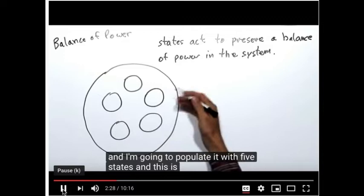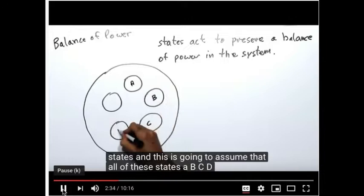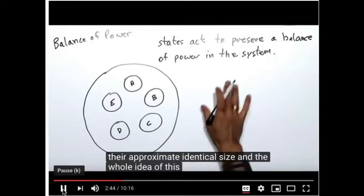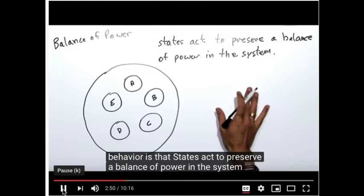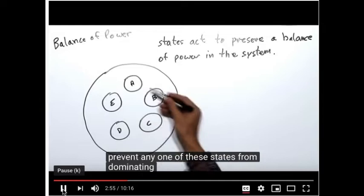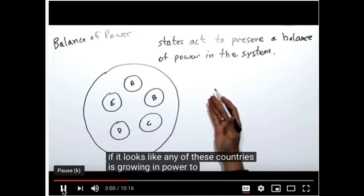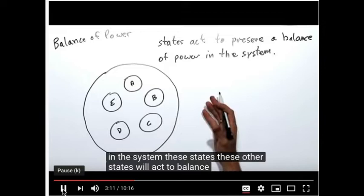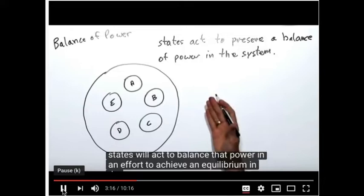Assuming that all five states — A, B, C, D, and E — are roughly equivalent in power, as reflected by their approximate identical size, the whole idea of balance of power behavior is that states act to preserve a balance of power in the system to prevent any one state from dominating all the others. If any country grows in power to the extent that it could dominate or even conquer all other states, those other states will act to balance that power and achieve an equilibrium.